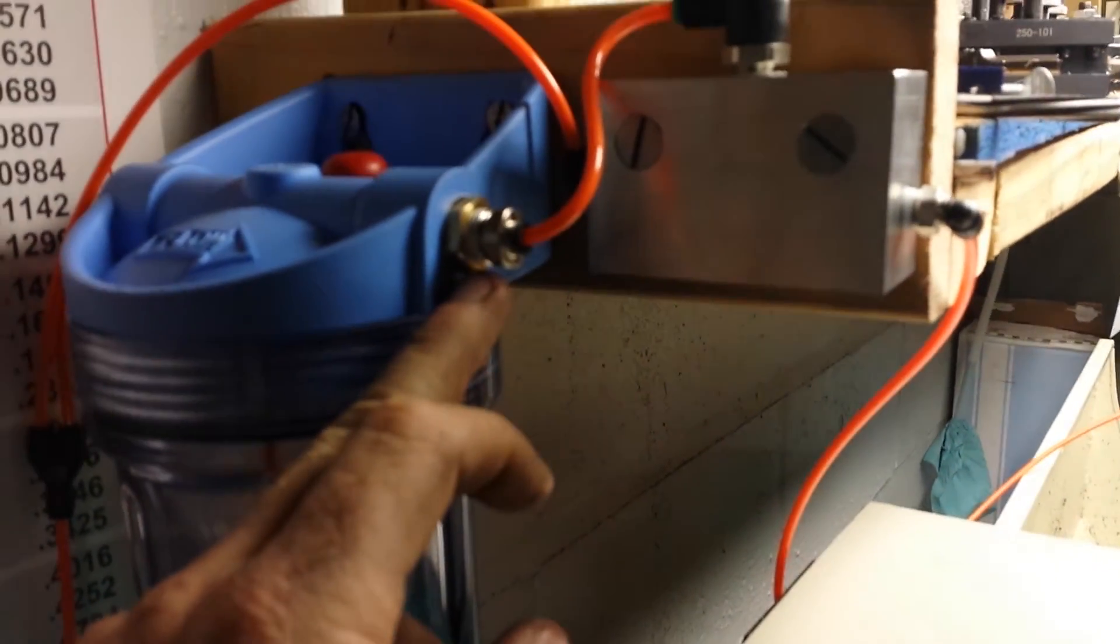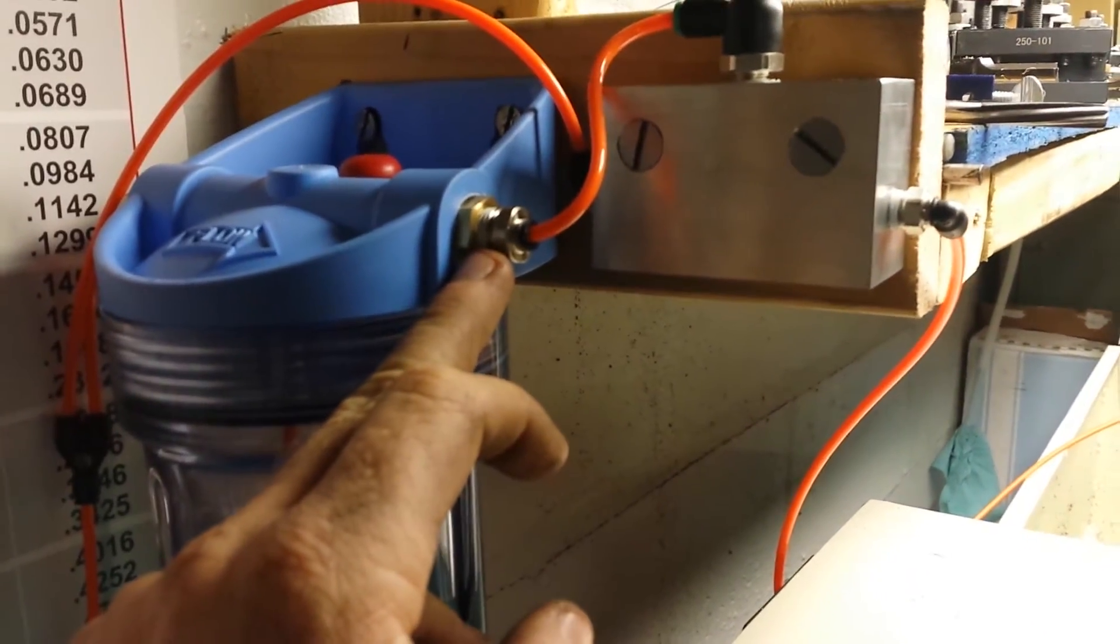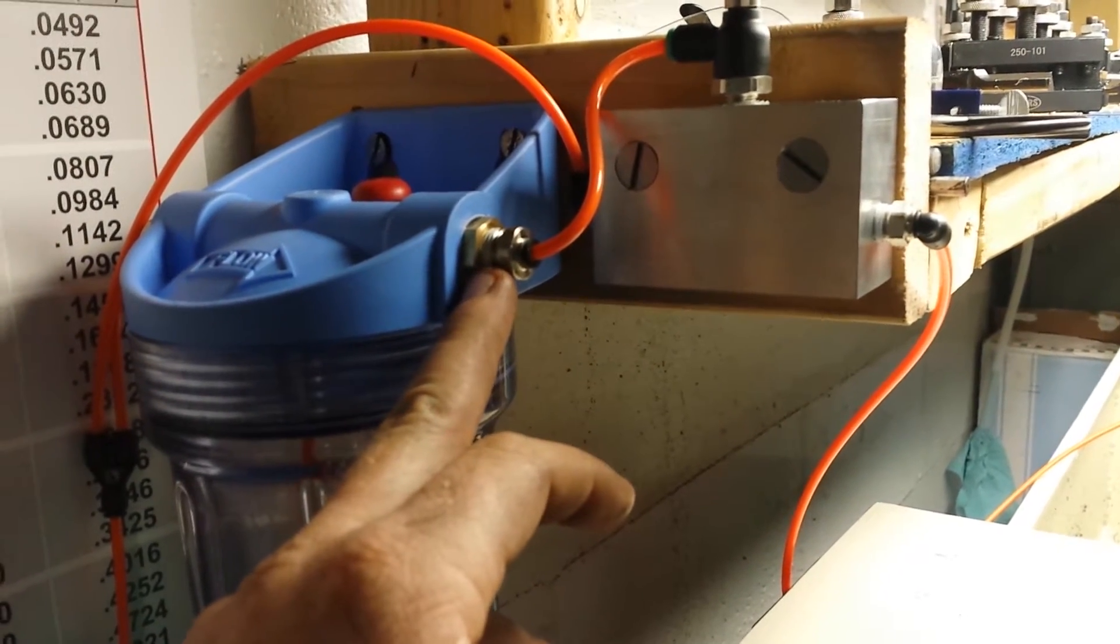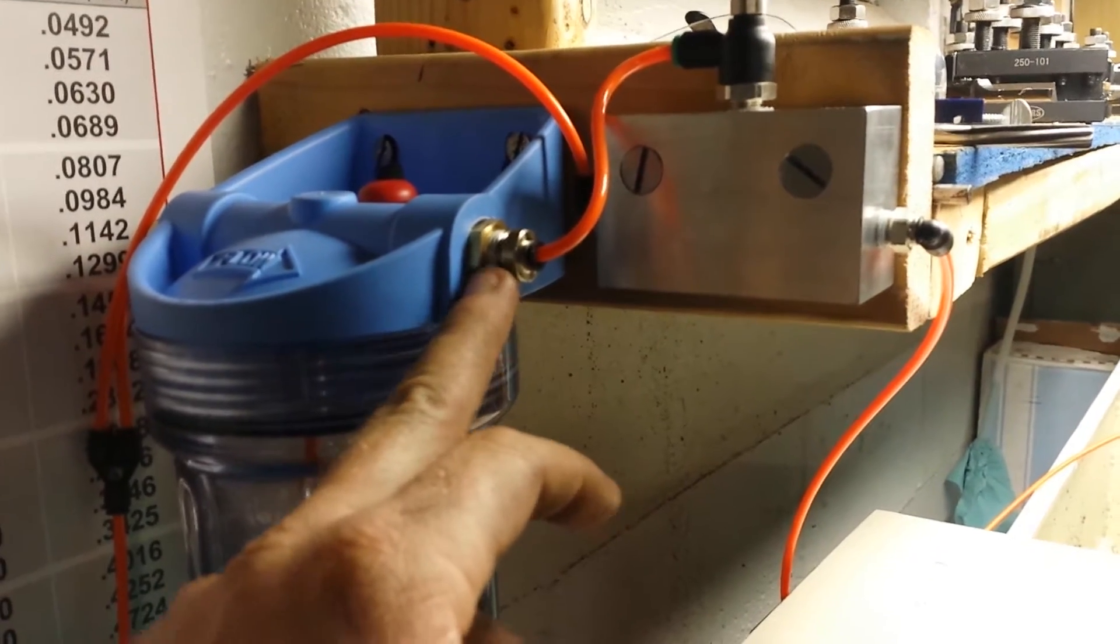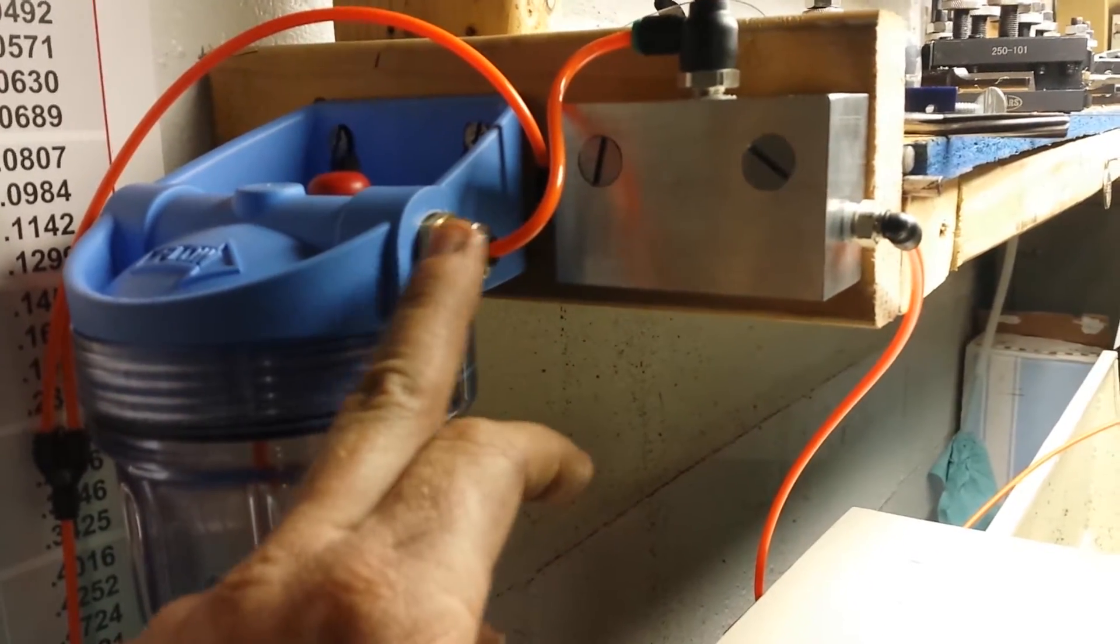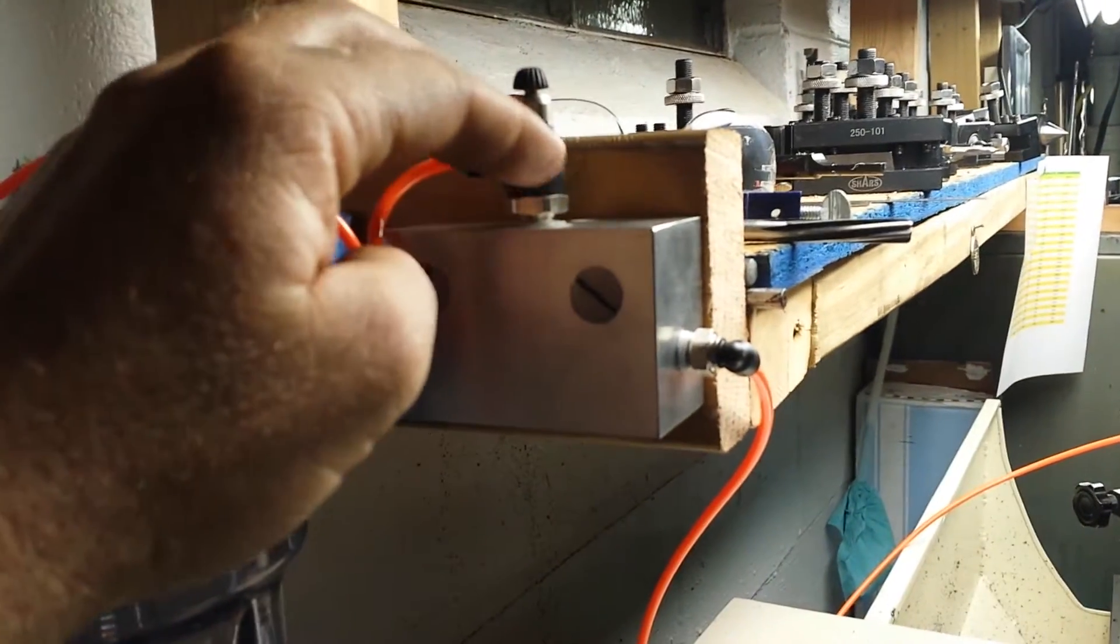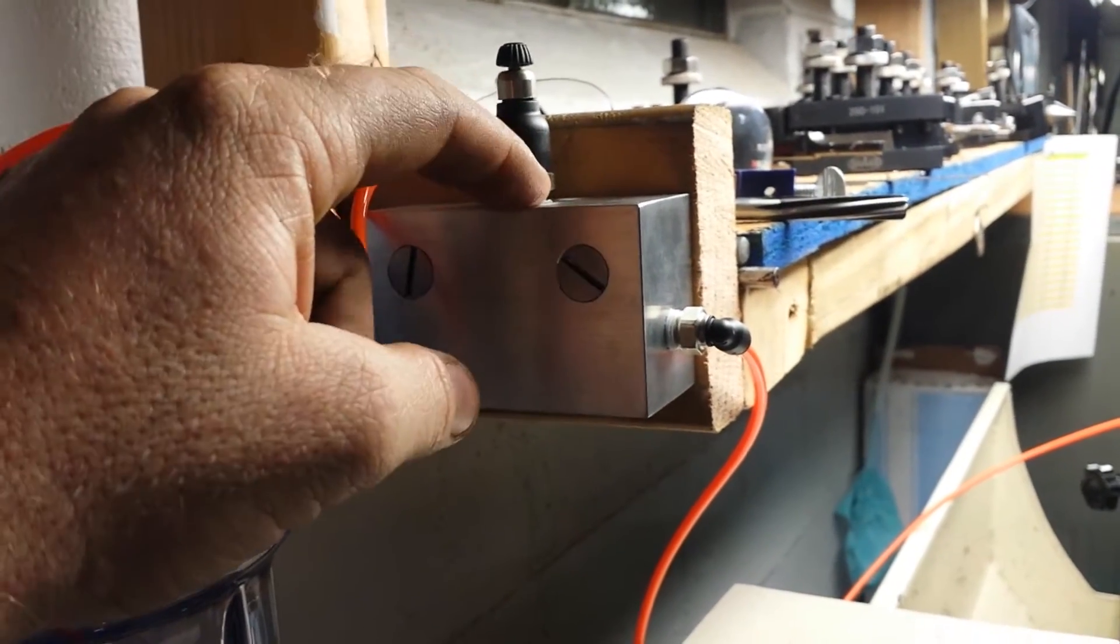And these little fittings are Parker Legris, L-E-G-R-I-S fittings. They come in basically 1/8 inch NPT and 1/4 inch NPT, and that one comes out up into the needle valve regulator here, in the top of the mixing block.